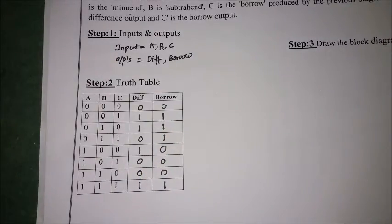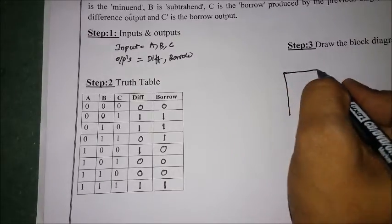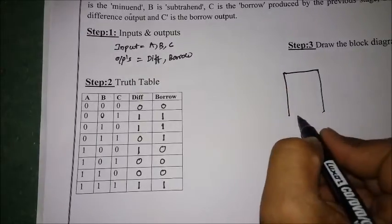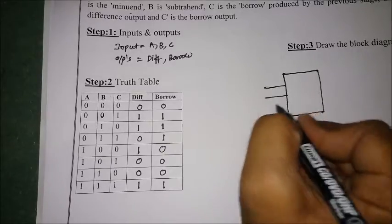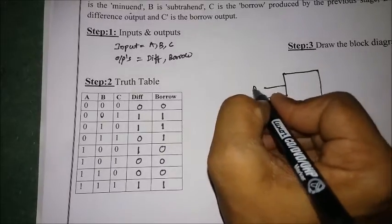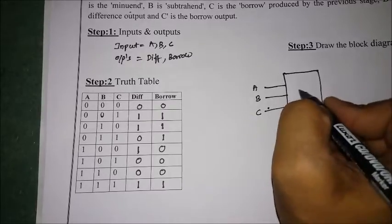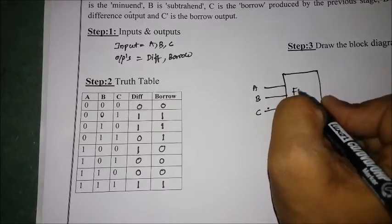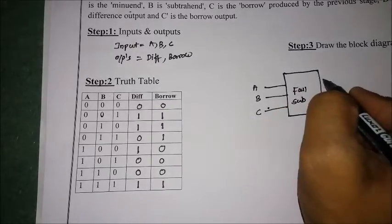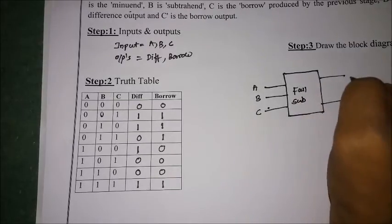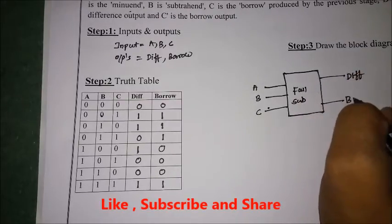Now drawing the block diagram of the full subtractor: A, B, and C are the three inputs, and there are two outputs — one is the difference and the other is the borrow.